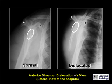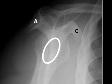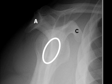This is a Y view of the shoulder — a lateral view of the scapula. On this normal Y view, you can see that the glenoid, marked here by the white oval, lies midway between the posterior acromion, marked with an A, and the anterior coracoid process, marked with a C.